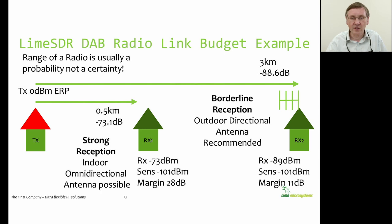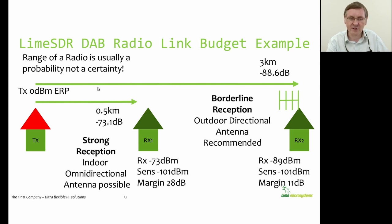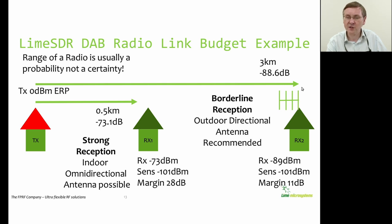Let's look at a simple DAB system. If you want to set up your own radio station and broadcast to your neighbours at half a kilometre, you have about 73 dB of atmospheric attenuation. With a sensitivity of about minus 101 dBm, you have a link margin of about 30 dB. At 3 kilometres the propagation loss rises to 88.6 dB and the link margin drops to 11 dB. You can recover some of that by using a highly directional antenna giving 20 dB gain, restoring the 30 dB link margin.